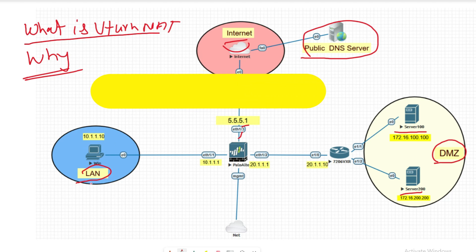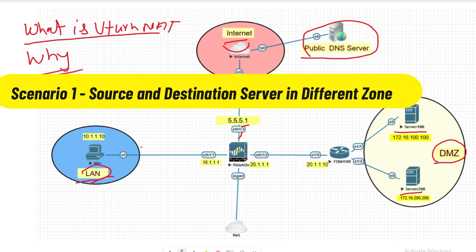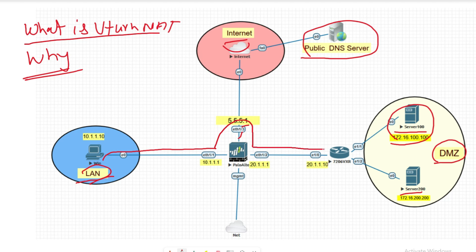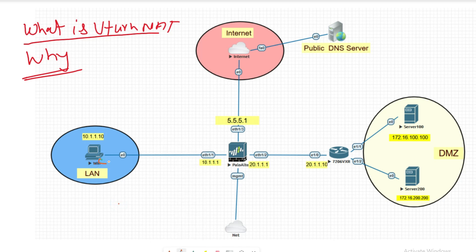So what is U-Turn NAT? When this internal user tries to access this internal server from the public IP address, that is called U-Turn NAT. The traffic will not directly access the server — the user hits traffic on the public IP address.